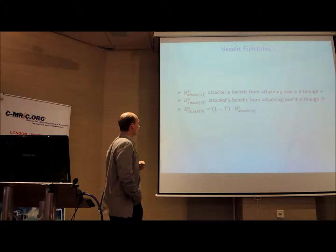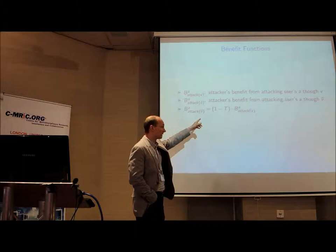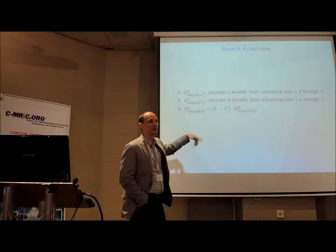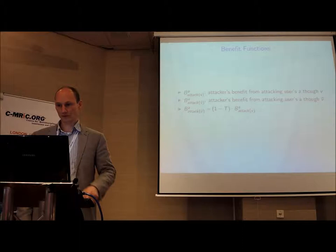And also then again trying to formulate the dependency on the trust. So if the cloud provider here, the value T is 1, it would mean that the attacker here does not get any benefit from the attack because it would be too well protected. So that's the link between those quantities.